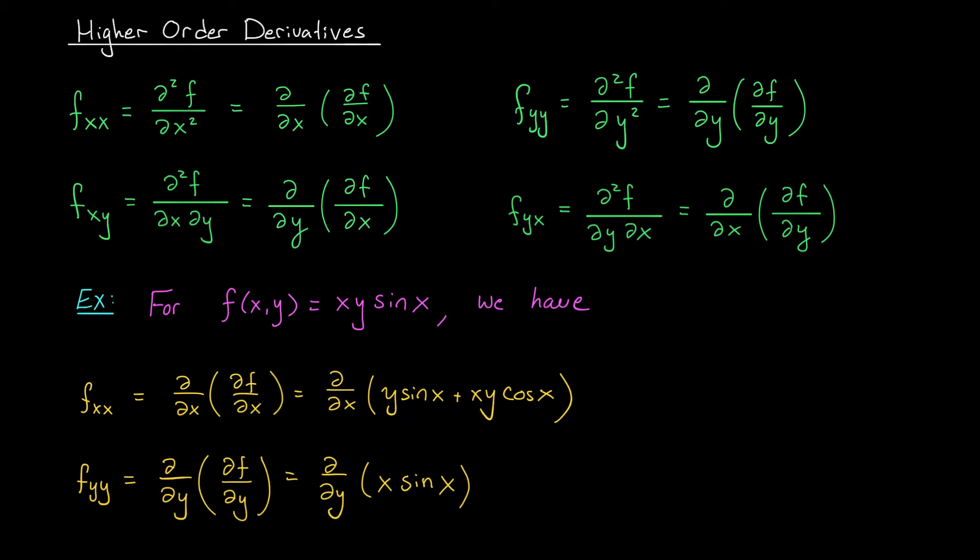Now, what gets really interesting is when you start mixing the partial derivatives. Maybe you take one with respect to x, and then with respect to y. That's denoted by fxy. We read left to right here. So this is first with respect to x, then with respect to y. Alternatively, though, we could have gone the other way. We could have first taken the derivative with respect to y, and then with respect to x. That's denoted by fyx. So, to get some practice with this, why don't we consider the same function from the warm-up? f(x,y) equals xy sine x. We've already found the first order partial derivatives, fx and fy. Now we're going to find all four second order partial derivatives.